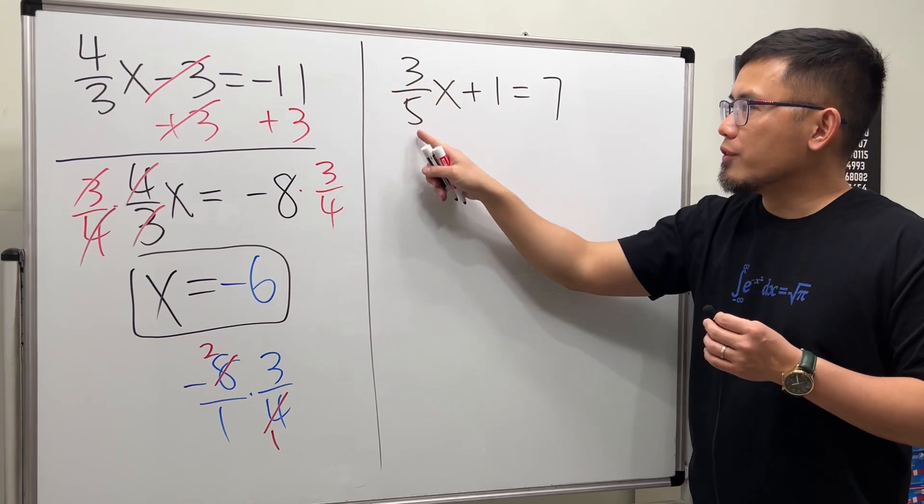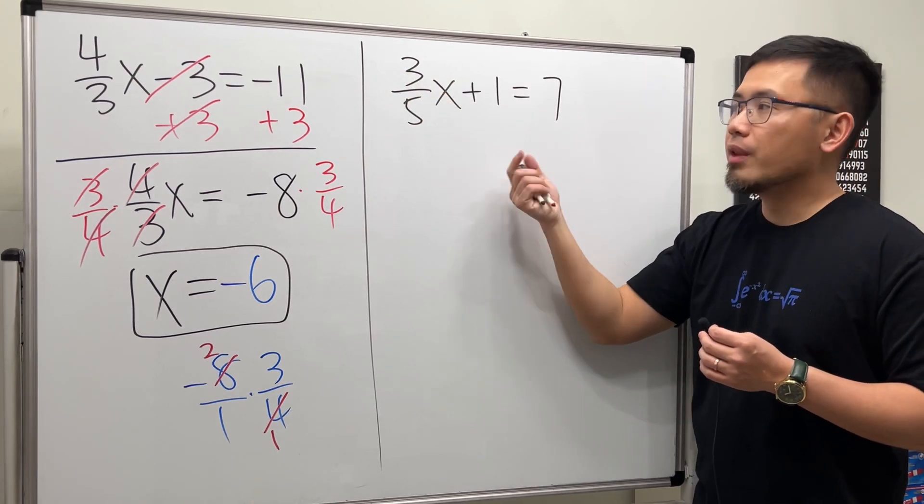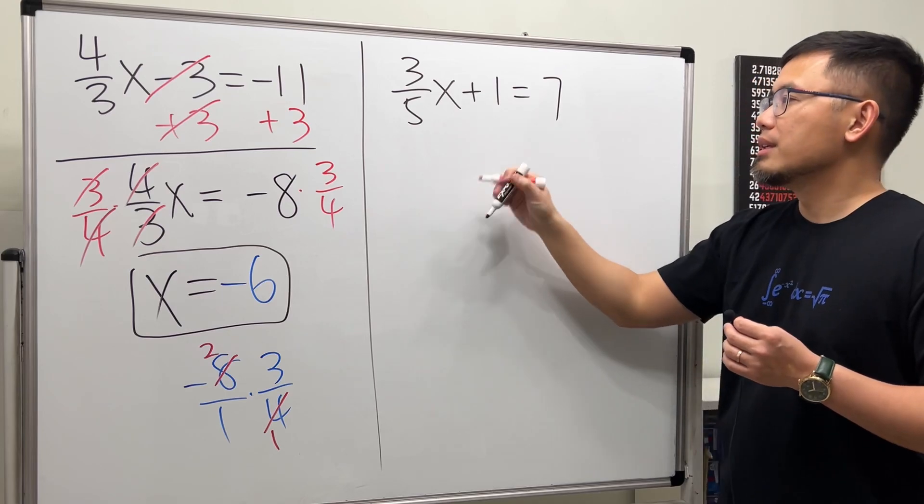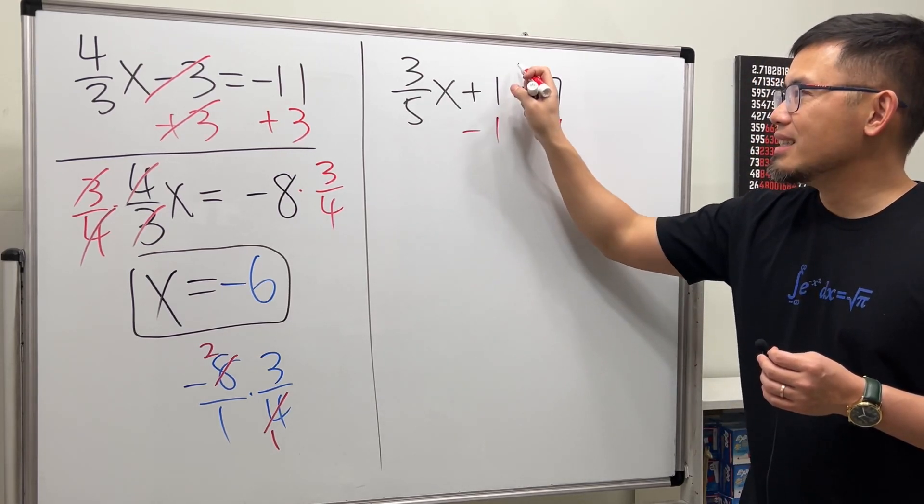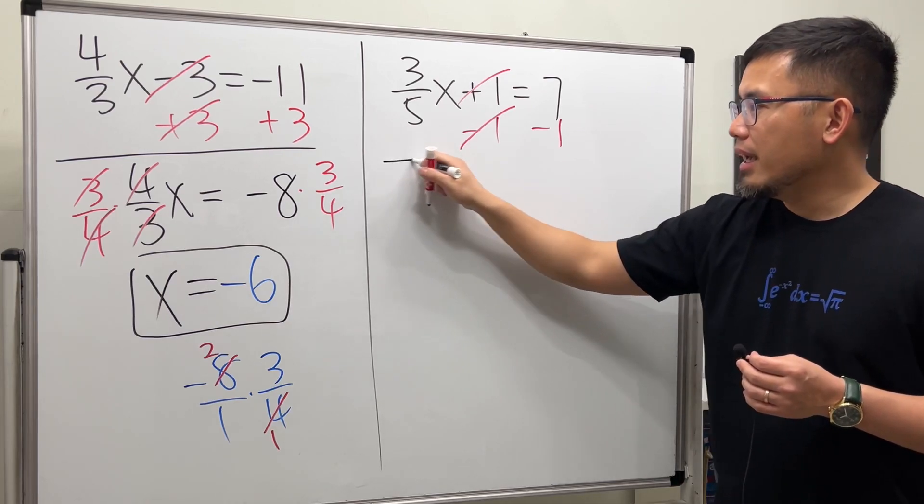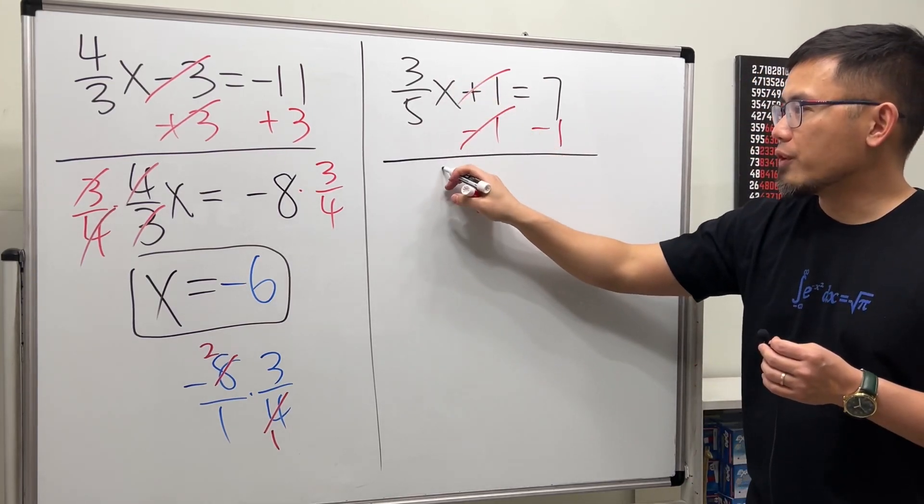Here we have 3/5x plus 1 equals 7. We have to get rid of the 1 first. That's minus 1 on both sides. Do the opposite so they can cancel, and we will have 3/5x. 7 minus 1 is 6.